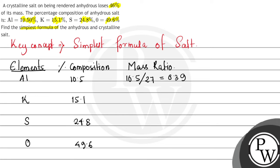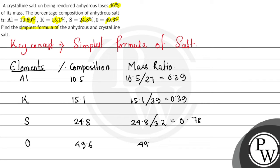For potassium, we divide 15.1 by 39 and get 0.39. For sulfur, we divide 24.8 by 32 and get 0.78. For oxygen, we divide 49.6 by 16 and get 3.1.